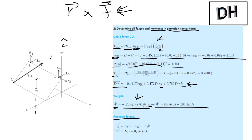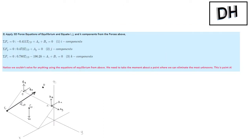Then we have the reaction forces. The reaction forces at A are going to be Ax in the I, Ay in the J, and Az in the K. The reaction forces at B are going to follow similarly, but at B we have no J component — we only have x and z, meaning I and K directions.